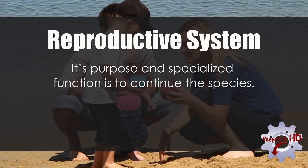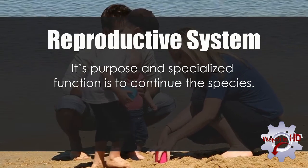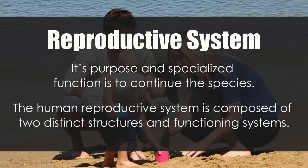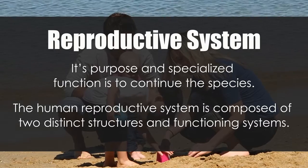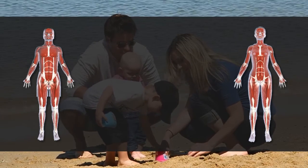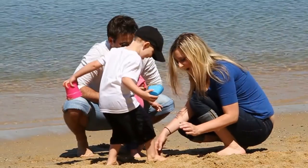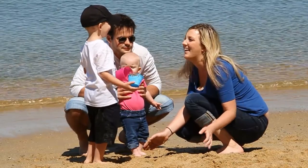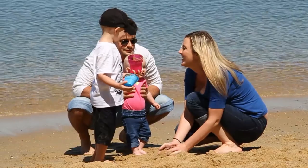The reproductive system — its purpose and specialized function is to continue the species. The human reproductive system is composed of two distinct structures and functioning systems: the male and female systems. You'll find out more about how these highly specialized systems work in our anatomy and physiology series.